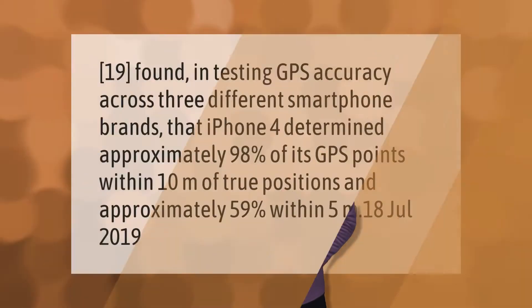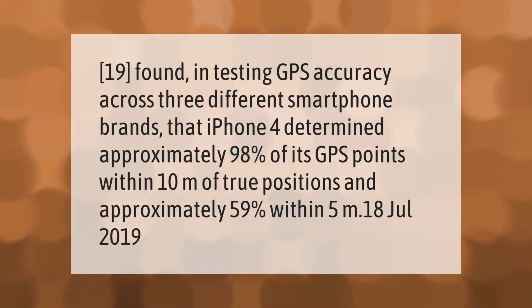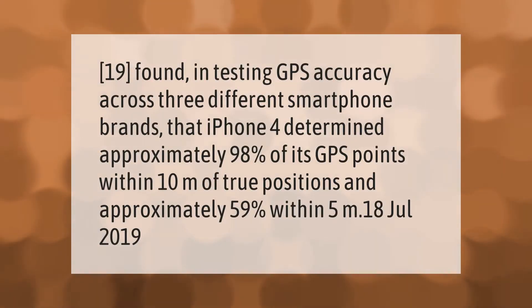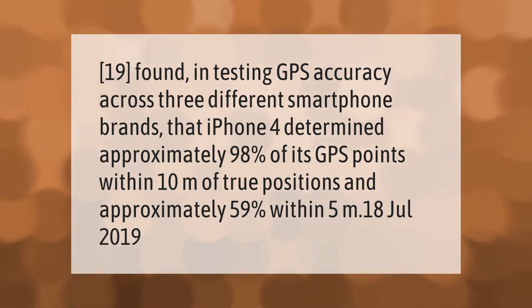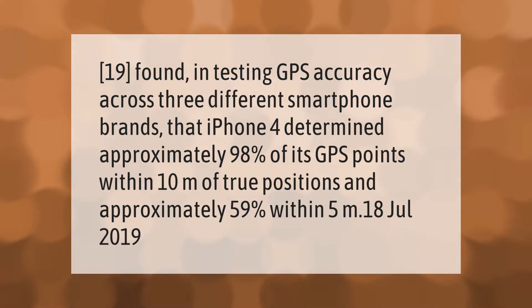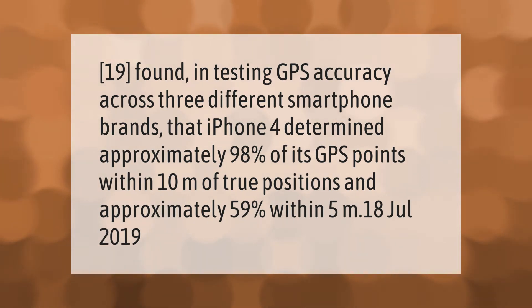Testing GPS accuracy across three different smartphone brands found that the iPhone 4 determined approximately 98 percent of its GPS points within 10 meters of true positions, and approximately 59 percent within 5 meters.